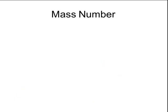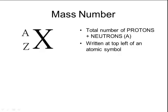Another number that's important when notating atomic symbols is the mass number. The mass number is the total number of protons and neutrons in the nucleus. It is symbolized by the letter A and is always written in the top left-hand side of the atomic symbol.